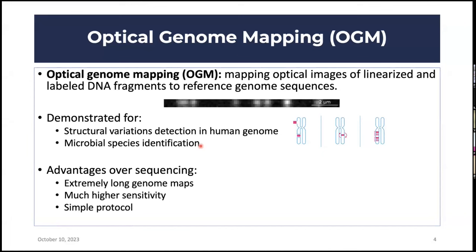The technology is defined as mapping optical images of linearized and labeled DNA fragments to reference genome sequences. Advantages over sequencing include extremely long genome maps, which is very important for human genomics and structural variation studies, and much higher sensitivity potentially, because of a very simple protocol compared to shotgun sequencing. It's a single molecule technique — that's the main advantage.